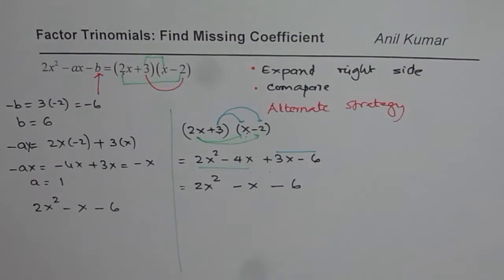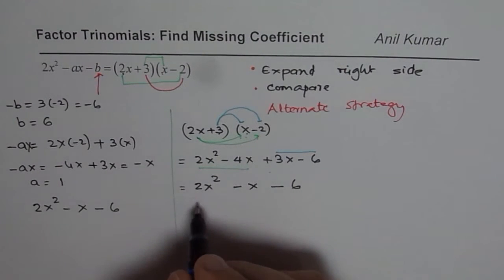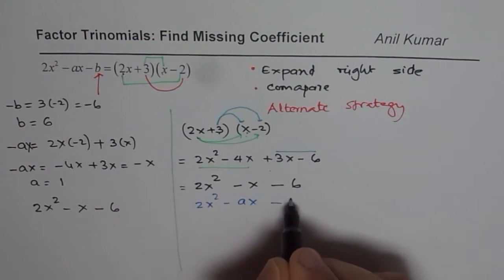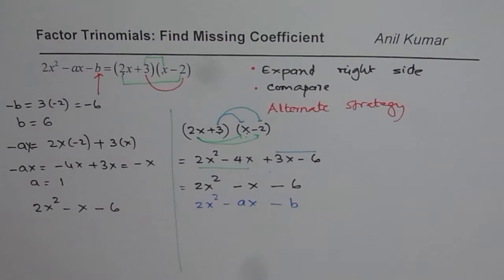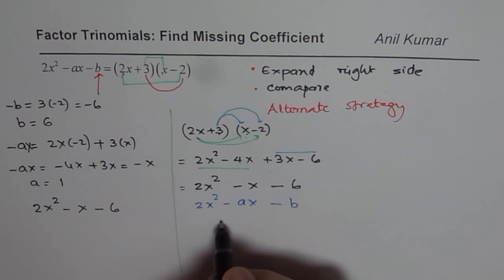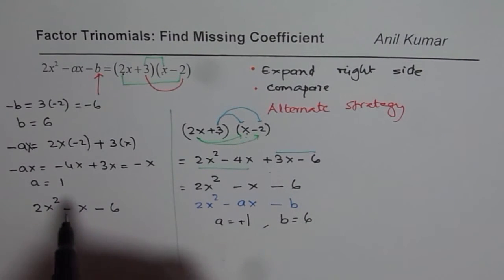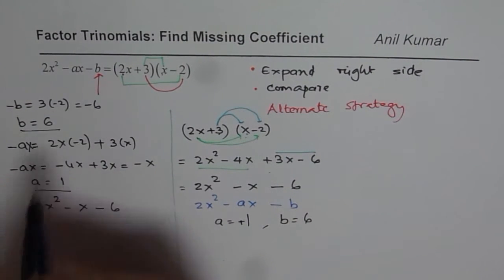So once you combine, you can compare with what is given to you. You are given 2x² - ax - b. From here, you can compare and write down that a = 1 and b = 6. So we get the same answer.